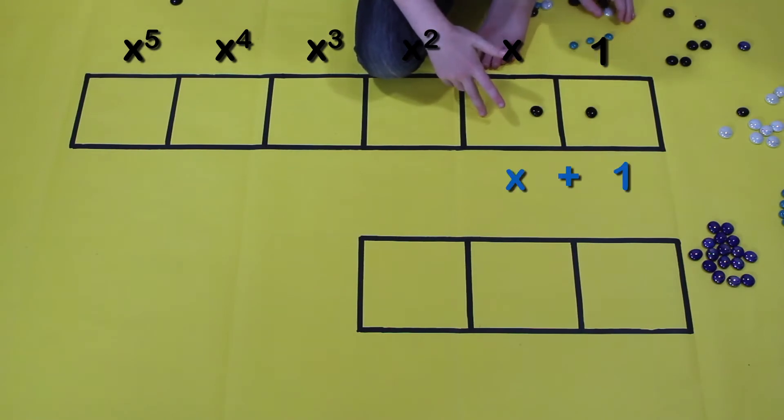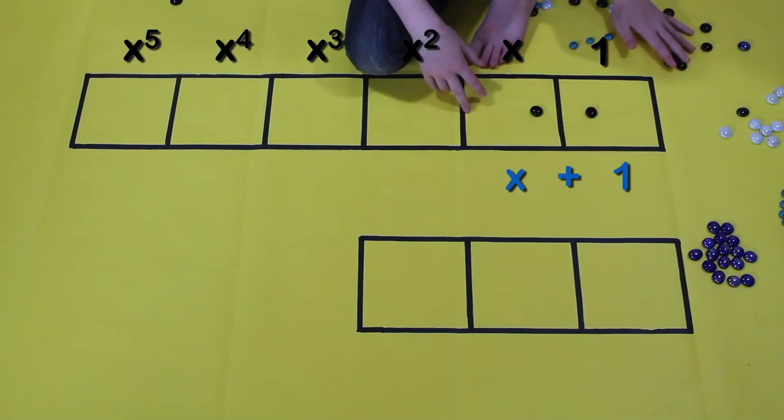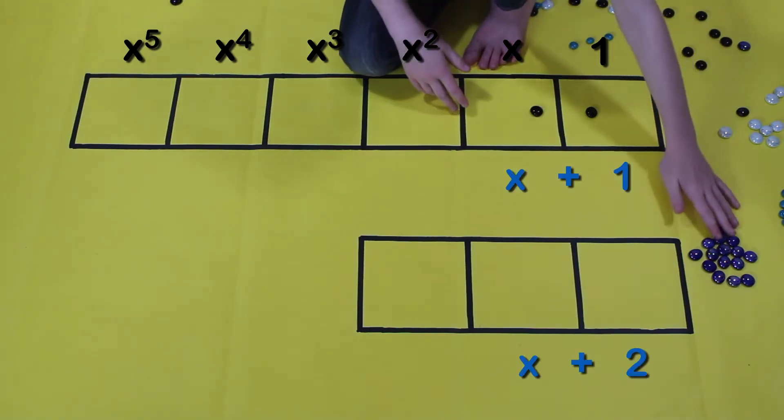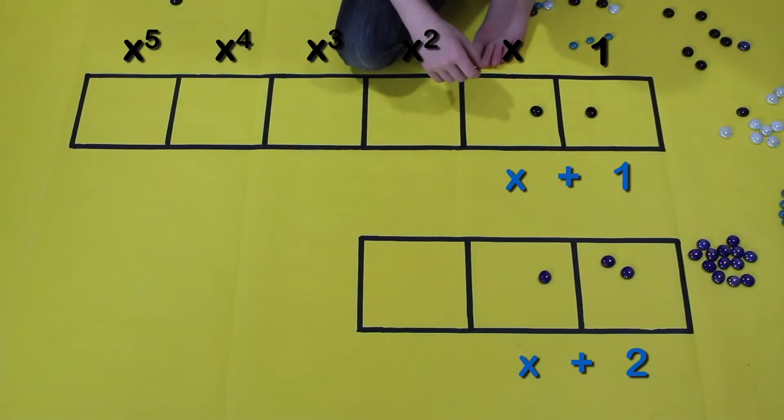We got x plus 1 and x plus 2. Now we got to multiply them.